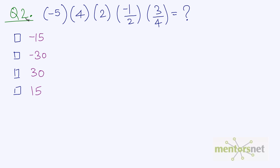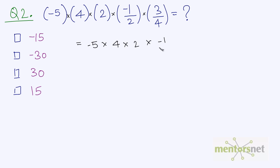Let us solve question number two — this is quite an easy one. Firstly, we'll have to remove the brackets. Whenever you have two brackets beside each other, or two numbers beside each other with a space, you always consider this as multiplication. So this is equal to 5 minus 5 times 4 times 2 times negative one-half times three-quarters.